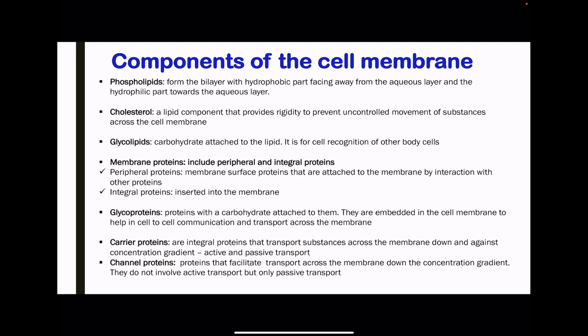Going through the components of the cell membrane in detail: phospholipids form the bilayer, with hydrophobic parts facing away from the aqueous layer and hydrophilic parts facing towards it. Cholesterol is a lipid component that provides rigidity to prevent uncontrolled movement of substances across the membrane. Glycolipids are made up of a carbohydrate attached to a lipid, and they are used for cell recognition — allowing one body cell to recognize another body cell.